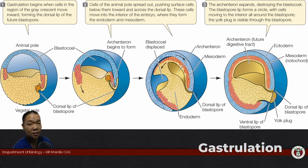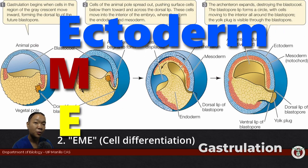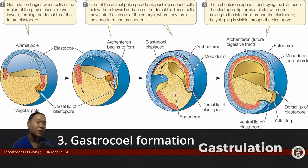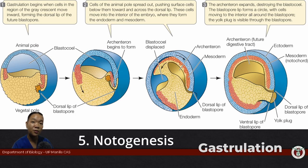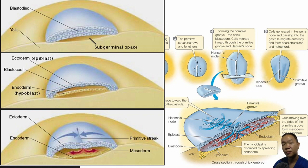You know it's gastrulation when these things happen: the blastopore debuts — in other words, your anus takes its first peek into the world. The three tissue layers are established: ectoderm, mesoderm, endoderm — EME. The gastrocele, as the primitive gut, appears. The anteroposterior and left-right axes are slowly becoming defined, and the formation of the notochord starts here. The main difference in birds is that instead of a blastopore, you first form a primitive streak, which then progresses to become the primitive groove. The space for cell migration is still limited to the blastodisc, so imagine this happening on top of a ball of yolk.